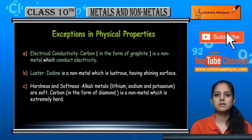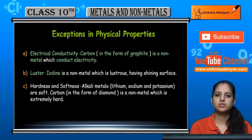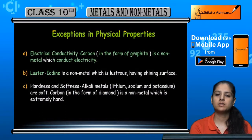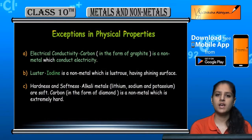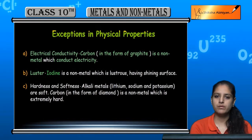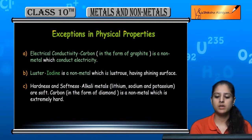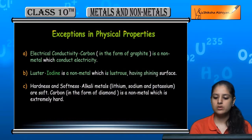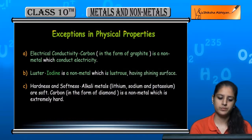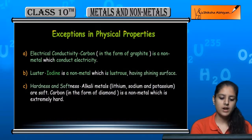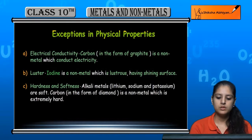Now talking about lustre: non-metals do not have lustre, but metals do have lustre. The exception here is iodine — iodine is a non-metal which is lustrous and has a shining surface.